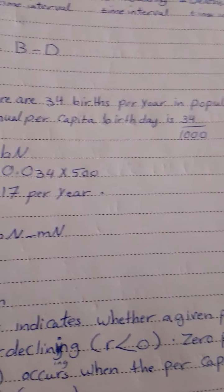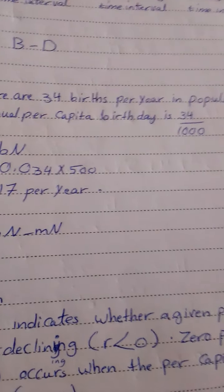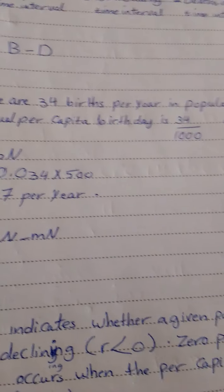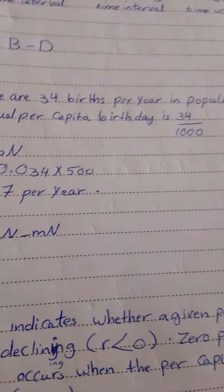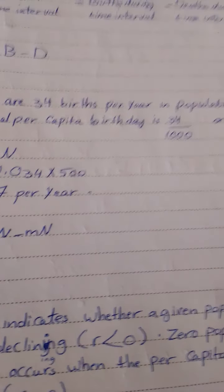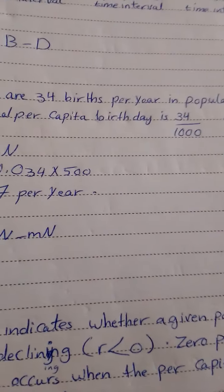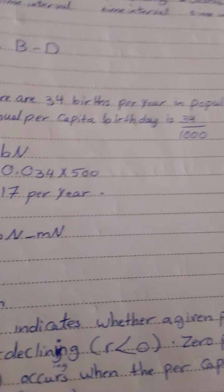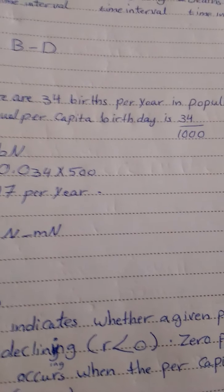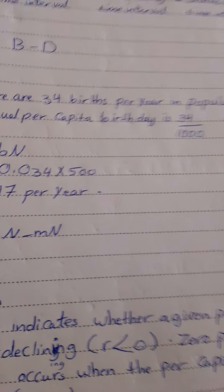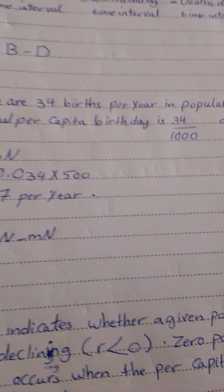If reproduction continued at this rate with no mortality for only a day and a half — a mere 36 hours — there would be enough bacteria to form a layer over the entire globe.